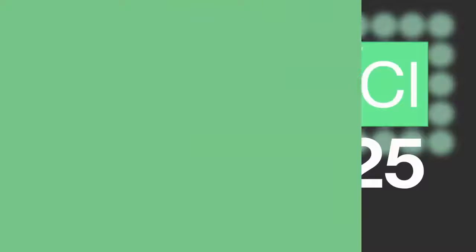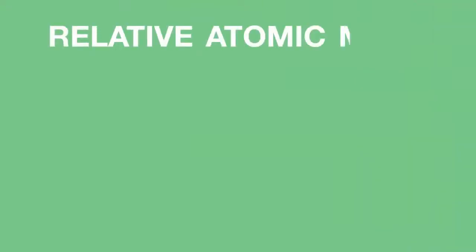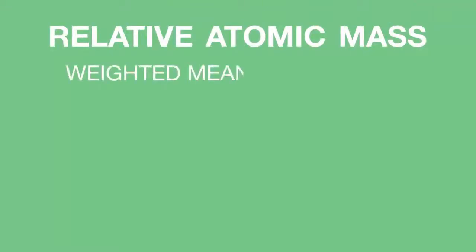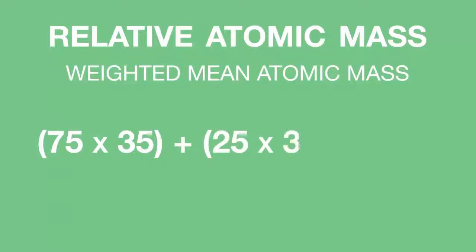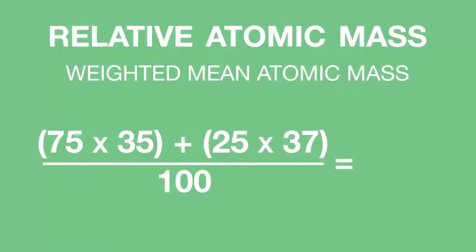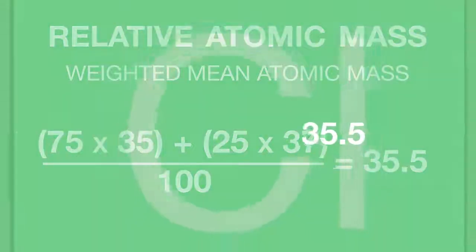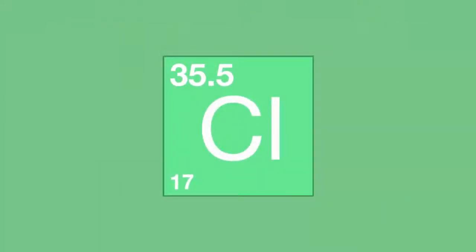Knowing this, we can work out the relative atomic mass — in other words, the weighted mean atomic mass — using a formula as follows: 75 times 35, plus 25 times 37, all divided by 100, equals 35.5. And this explains why chlorine is listed as having a relative atomic mass of 35.5 in the periodic table.